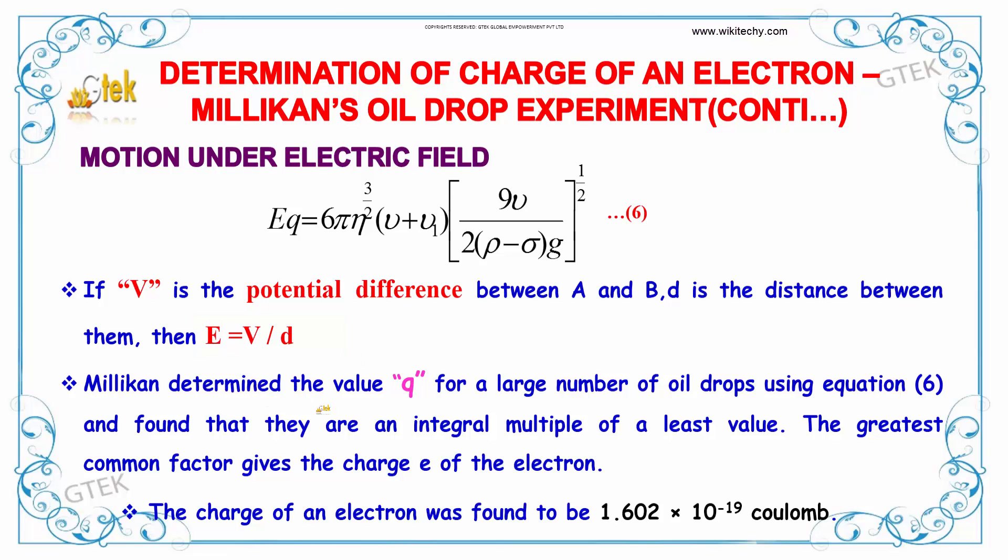Millikan determined the value q for a large number of oil drops using this equation and found that they are an integral multiple of a least value. The greatest common factor gives the charge e of the electron. The charge of an electron was found to be 1.602 into 10 to the power minus 19 coulombs.